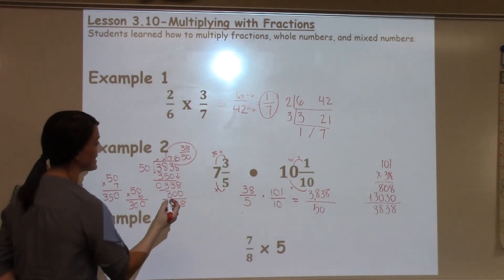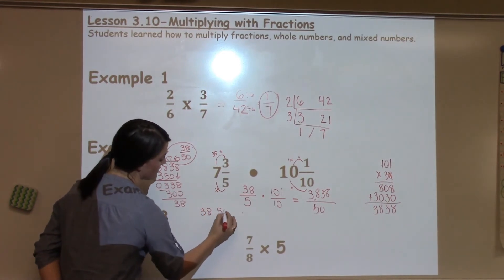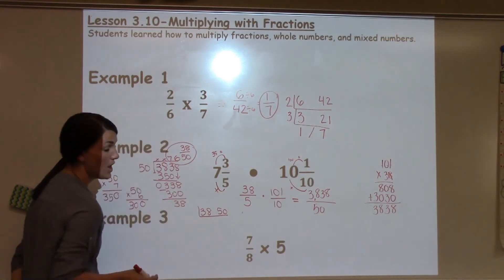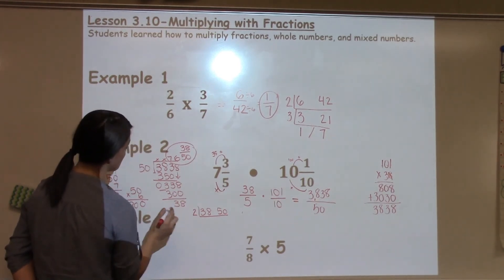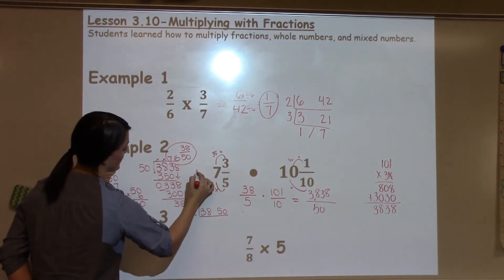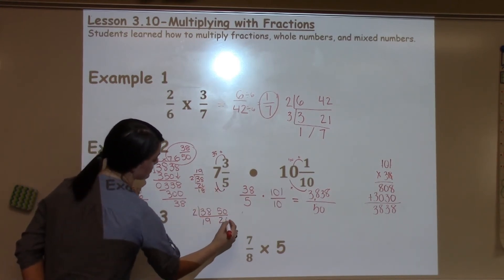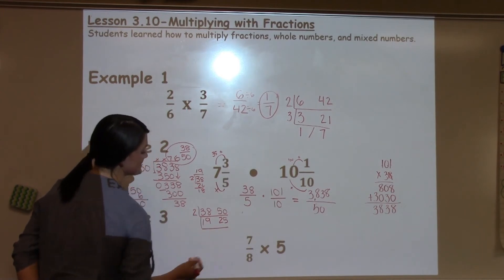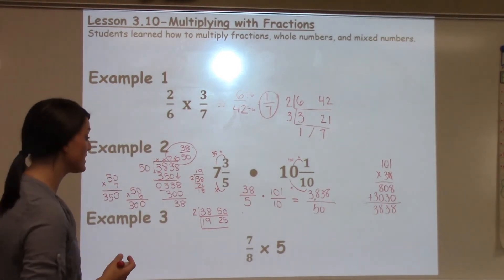Now again, 38/50 can reduce. So I can put 38 and 50 in the cake method. They're both even, so I'm able to divide by 2. 2 goes into 38... I'm going to do some math here to figure that out. 19 times. And I know 50 chopped in half is 25.